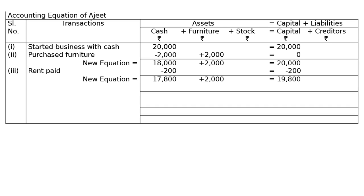The fourth transaction: he purchased goods on credit. Stock will be coming into the business and the person giving goods on credit is known as a creditor. We are not paying cash; we are buying on credit. Stock will increase by plus 3,000 and creditors will increase by plus 3,000. Then add this to the previous equation to get the new equation.